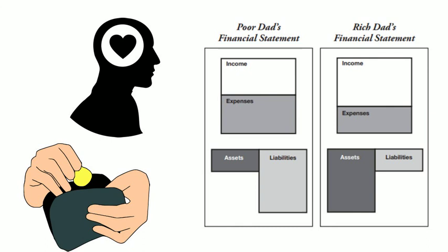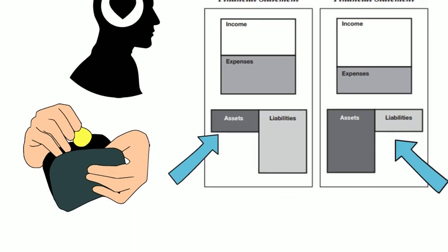Rich Dad's financial statement shows how expenses are less than earnings and the rest of the money is invested in the assets and he owns less liabilities. Poor Dad's statement is equal in expense and income and assets are far less than the liabilities. Poor people put their money in liabilities, and that's how sometimes they go broke.